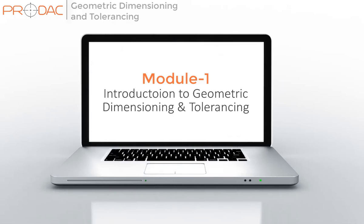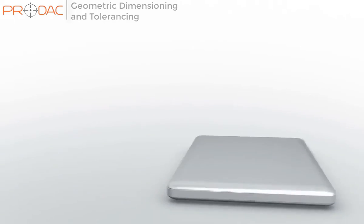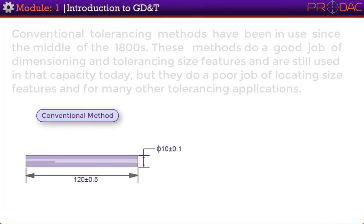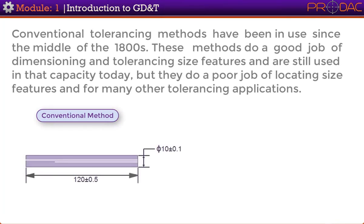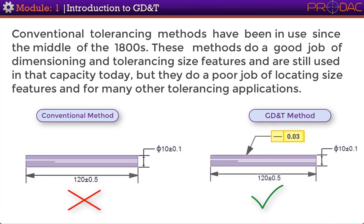Module 1: Introduction to Geometric Dimensioning and Tolerancing. Conventional tolerancing methods have been in use since the middle of the 1800s. These methods do a good job of dimensioning and tolerancing size features and are still used in that capacity today, but they do a poor job of locating size features and for many other tolerancing applications.